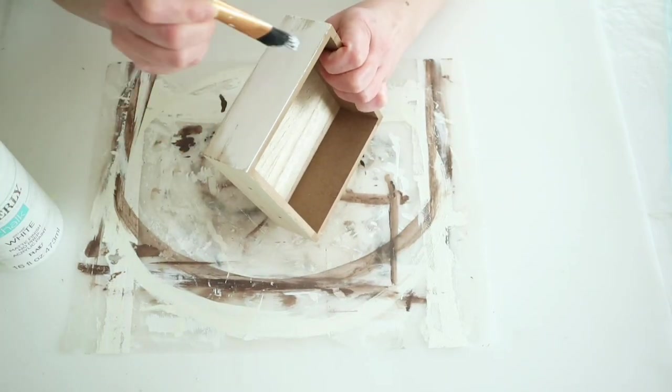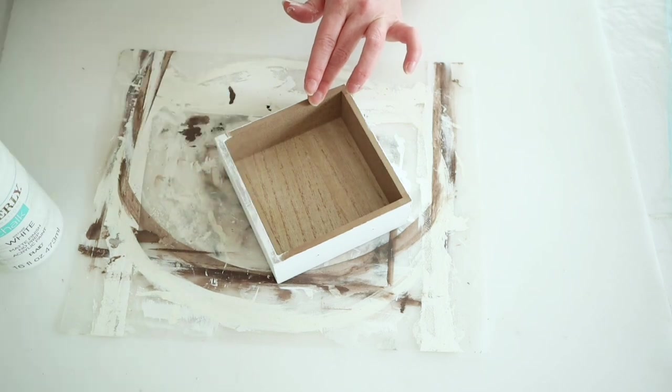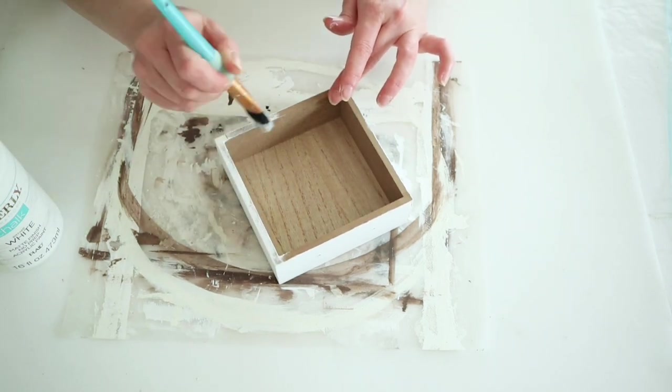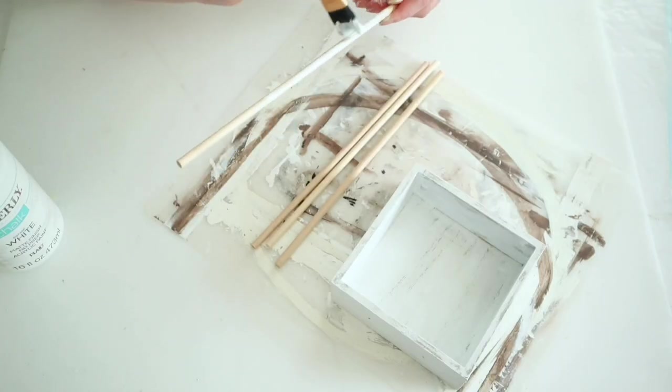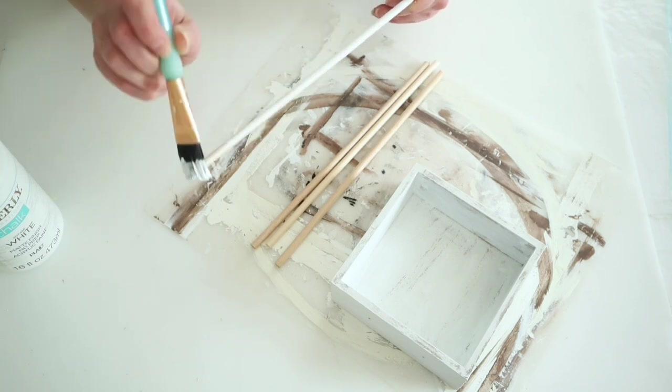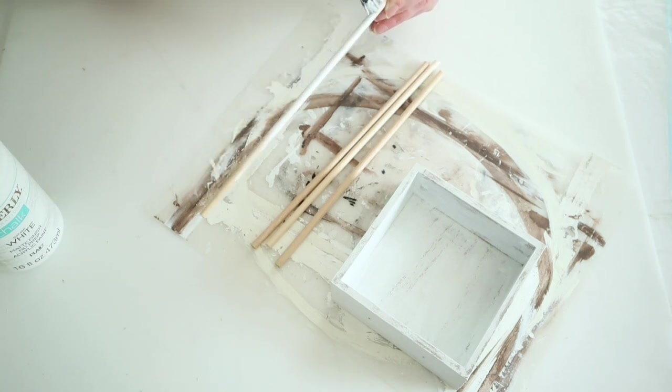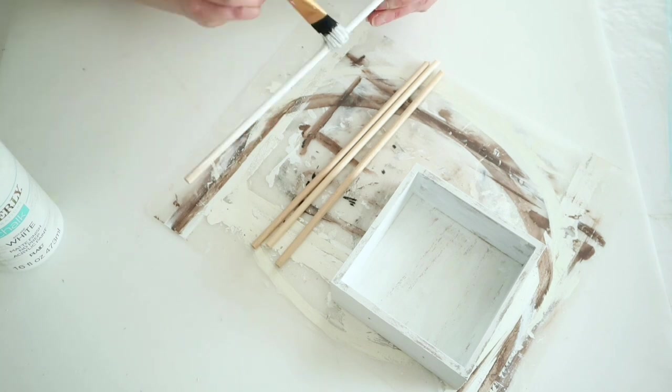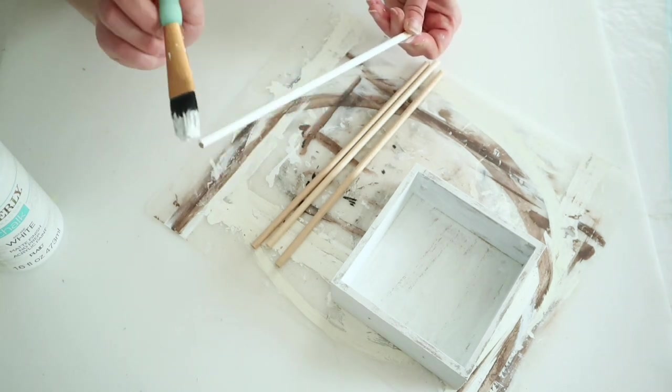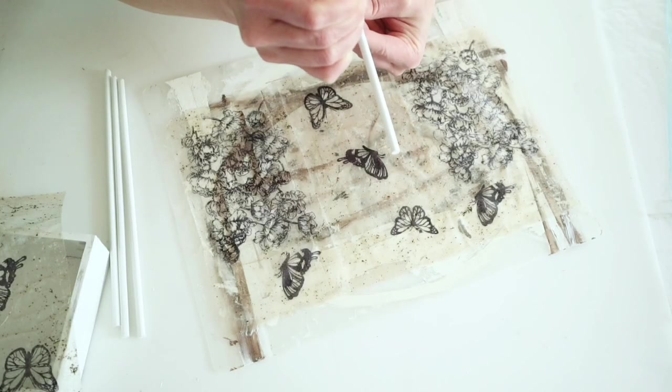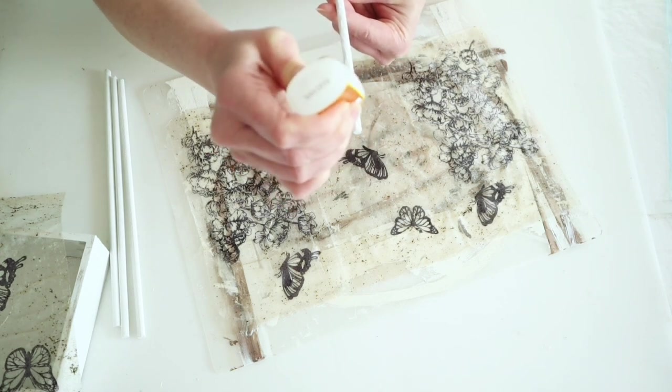I did end up cutting these dowel rods down just enough to fit in the box and also fit my napkin pieces. You'll see right here once I start putting this together—I laid out three of my sheets in the pattern that I wanted.